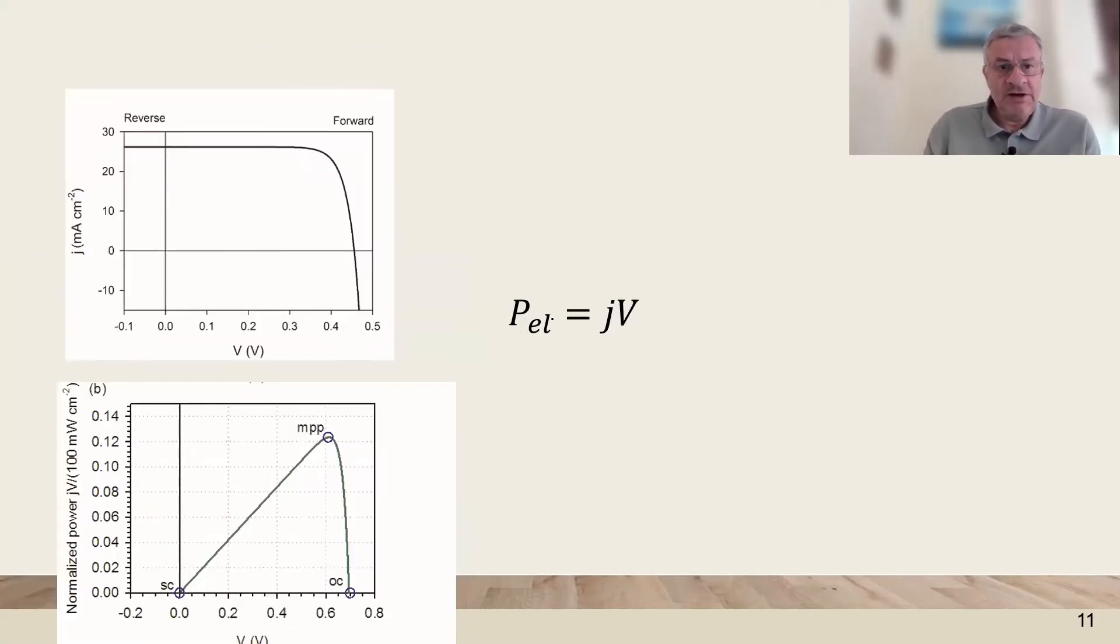We can find the maximum power point by multiplying at each point the current and the voltage. And then we have a graphic that has a maximum at a certain point a little bit after the bending point of this diode curve.